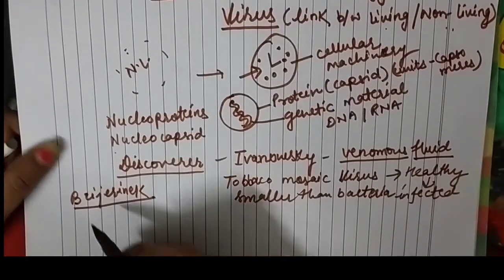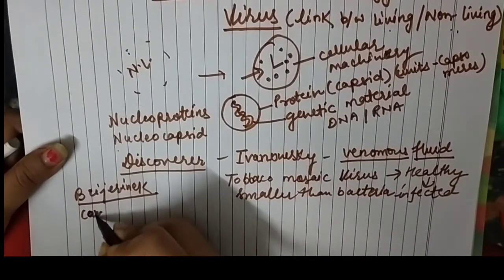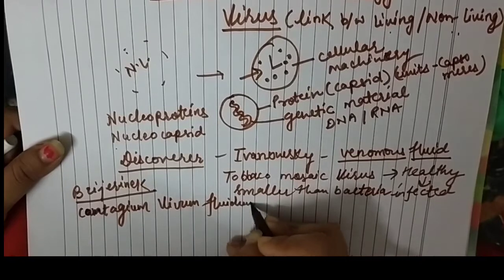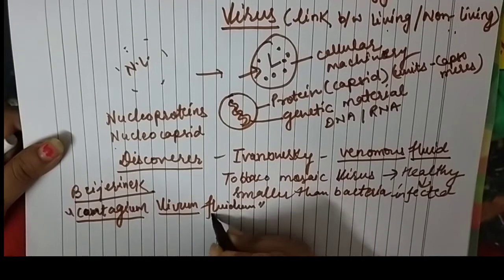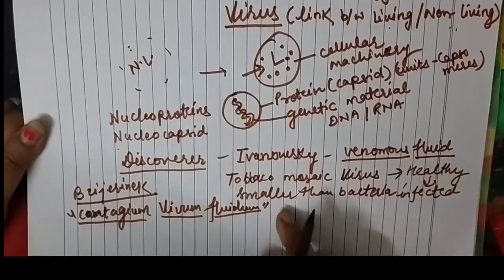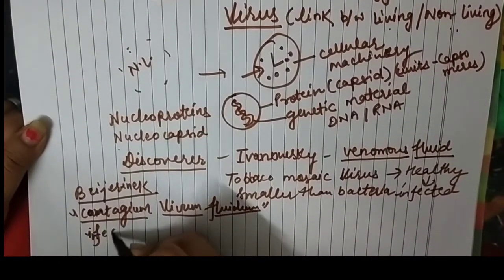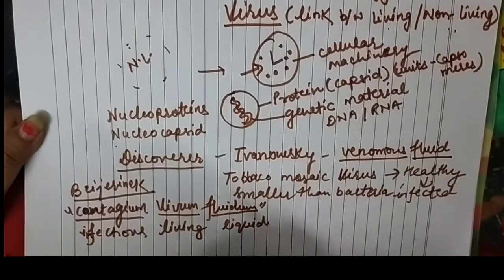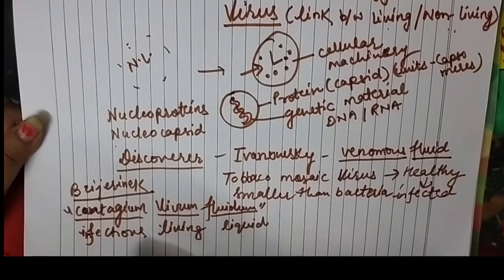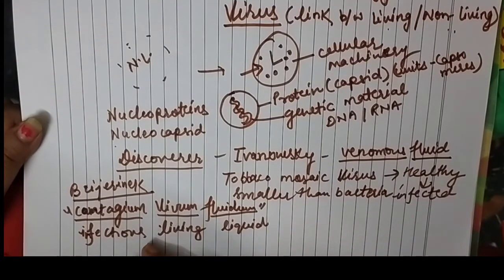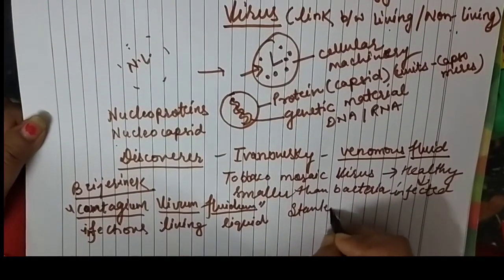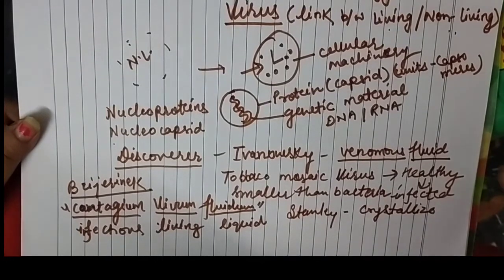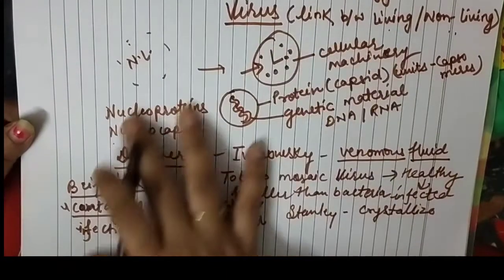Another scientist, Beijerinck, used the specific term 'contagium vivum fluidum.' These are Latin words used for biological names. 'Contagium' means infectious, 'vivum' means living, and 'fluidum' means liquid — so it means an infectious living liquid. Another scientist showed that the virus can be extracted into a stem and then crystallized, demonstrating that they act like a non-living when present in the outer environment.